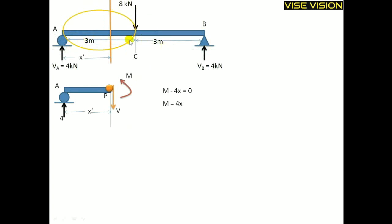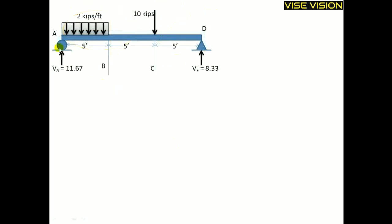Here only one concentrated load is acting over the beam, so I will make only one equation for this region. If there is a different loading condition, I will make a separate equation for each region. I will cut from here, take this distance as X, and make the moment equation for each region separately.